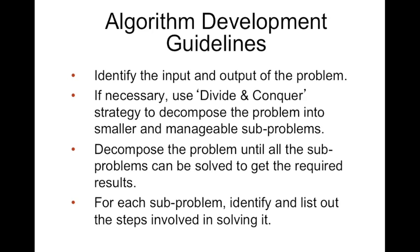There are some guidelines when we develop algorithms to make it easier or more consistent and systematic when trying to solve a problem using algorithm. So first of all we need to identify the input and outputs of the problem. Now if necessary, if the problem is complex, then we need to use the divide and conquer strategy, like what we discussed before, to decompose the problem into smaller and more manageable sub-problems. So then we decompose the problems until all the sub-problems can be solved to get the required results. And for each sub-problem, we identify and list out the steps involved in solving it. And in the end, we combine all these algorithms to solve all these sub-problems to become one main algorithm.